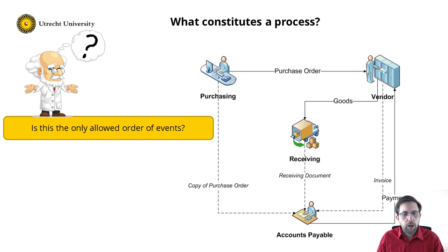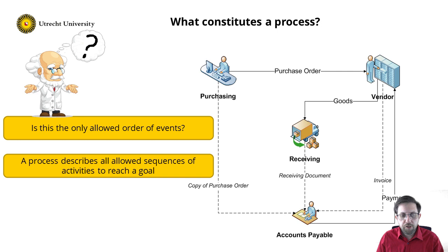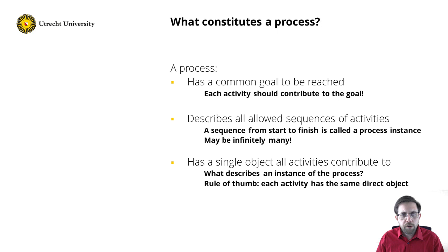But is this the only sequence allowed by the process? Of course, the answer is no. For example, the goods received and invoice could be in a different order. And what happens if the check of the invoice is not okay? So a process describes all allowed sequences of activities to reach a goal. In this example, the goal is to receive goods in order to deliver their product, and the scenario just sketched is just one out of many sequences the process allows for.